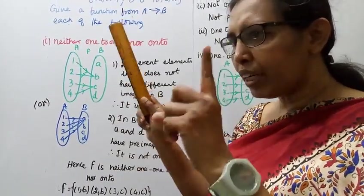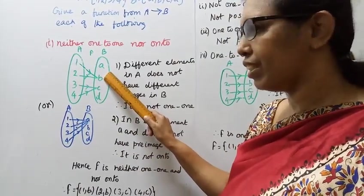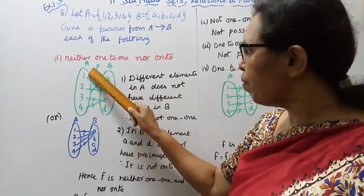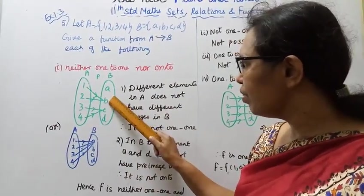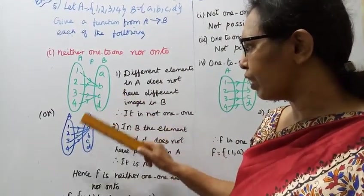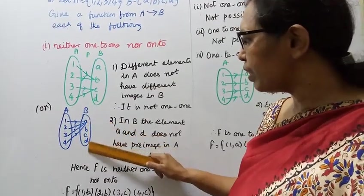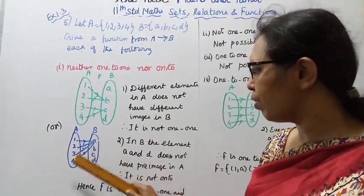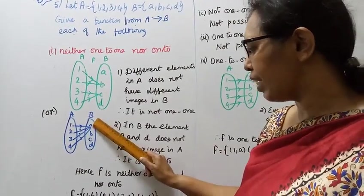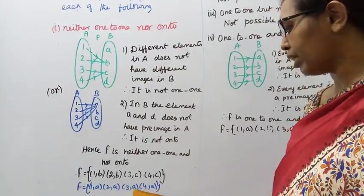More than one element have the same image. Many elements have one image - many to one. In A, there are 1, 2, 3, 4. In B: A, B, C, D. One maps to A, two to A, three to A, four to A. This is a constant function: f equals {(1,A), (2,A), (3,A), (4,A)}.